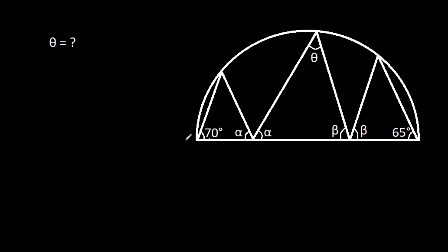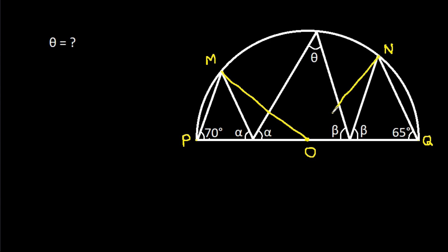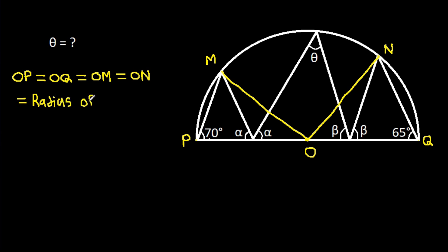Suppose this point is P, this point is Q, this point is M, and this point is N. Suppose the centre of the semicircle is O. Now if we join OM and ON, then OP will be equal to OQ, equal to OM, equal to ON — that will be the radius of the semicircle.